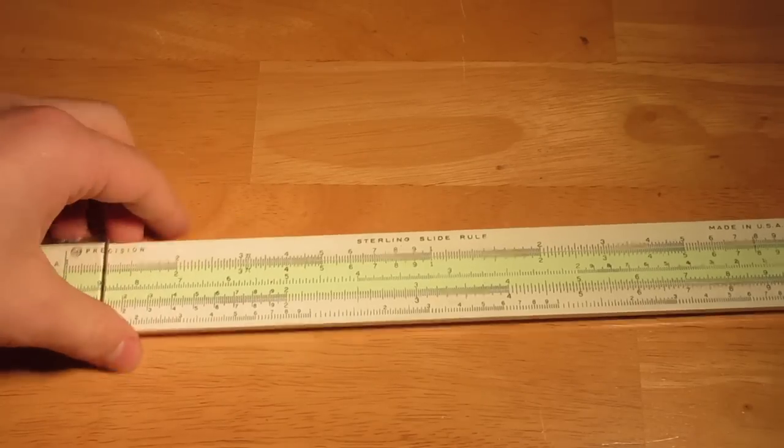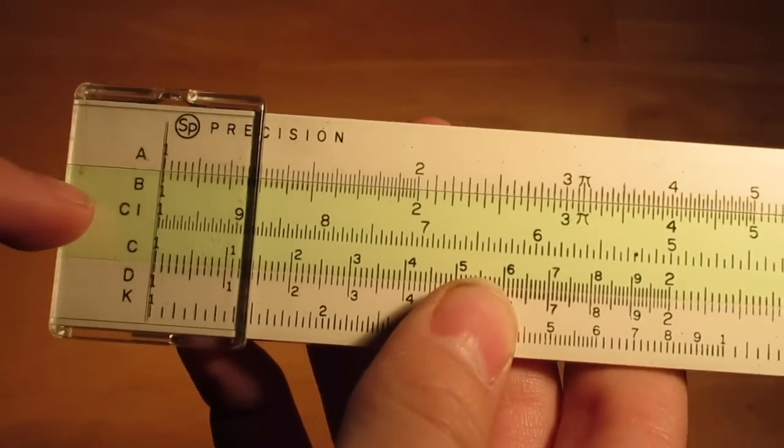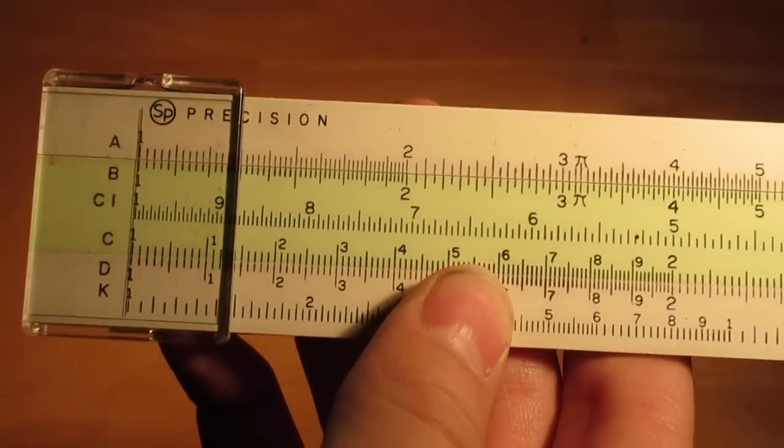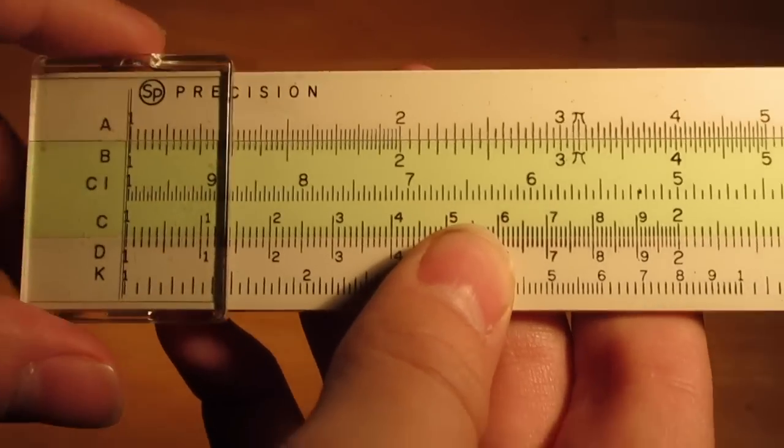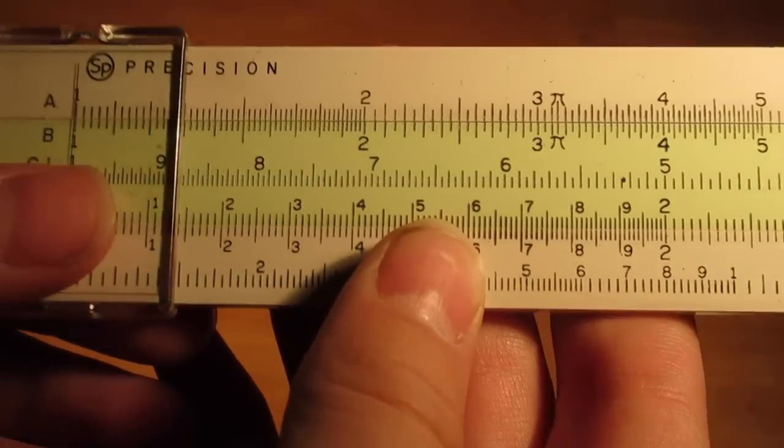If you look closely, the slide rule has lots of scales on it: A, B, C, the other C, D, and K. Today, we're only going to be using A and B, and for division, we'll only be using those two.